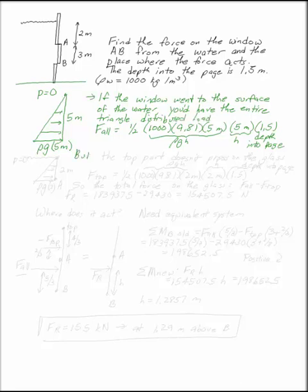But the window doesn't go to the surface of the water. The top part of the water doesn't press on the window. So I want to consider this where this is the surface of my water, pressure is 0 at the surface, and I want to go down just to point A.